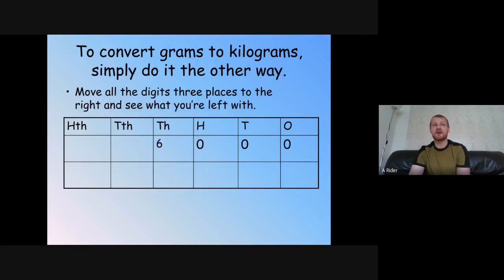Now we're going to look at converting the other way, from grams to kilograms. Like I said at the start, we divide by one thousand to convert grams to kilograms, which means each digit moves to the right three places. Have a go at this example. Move each digit three places to the right. Hopefully you moved the values to the right and worked out that your answer is six kilograms.